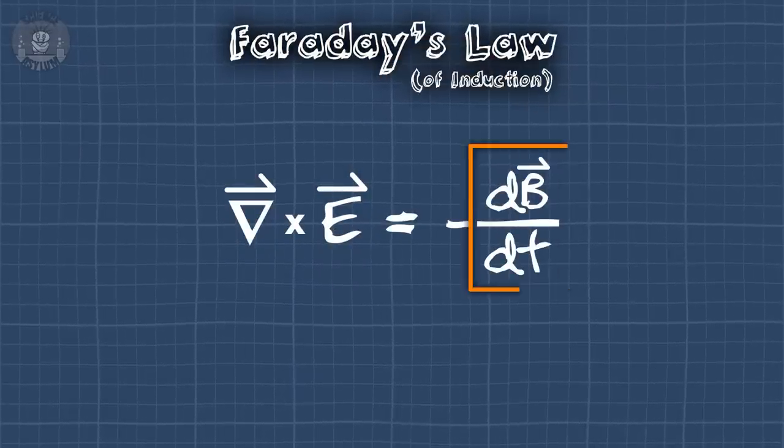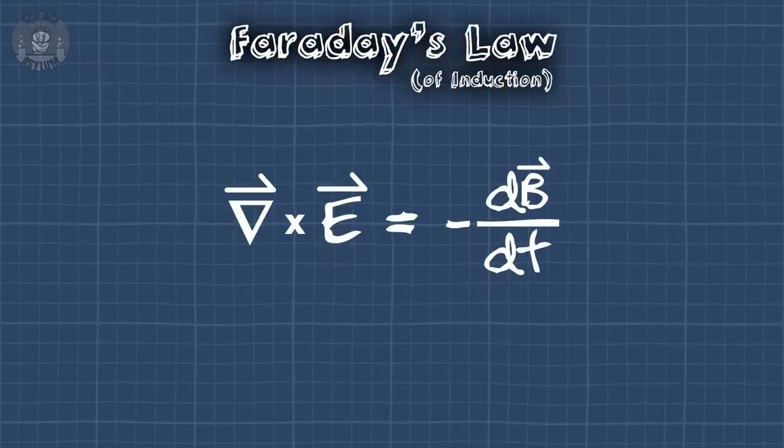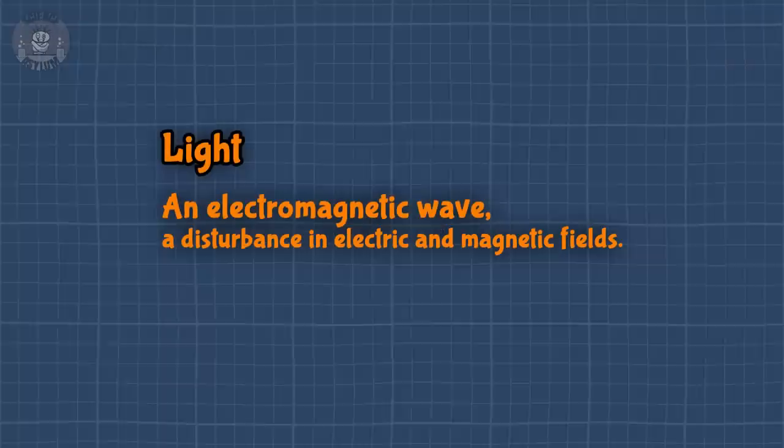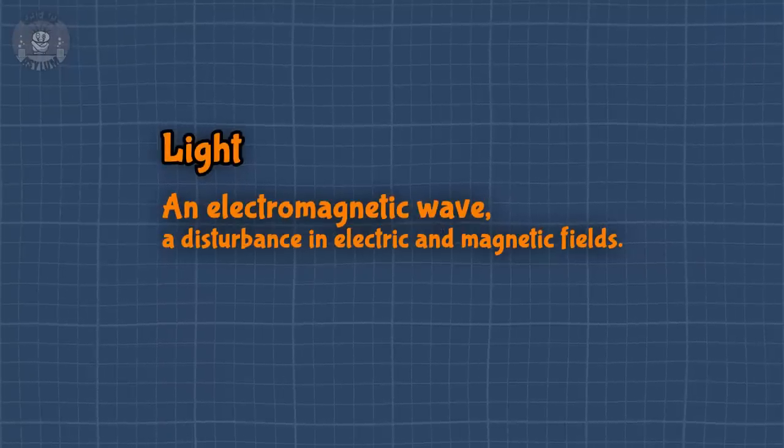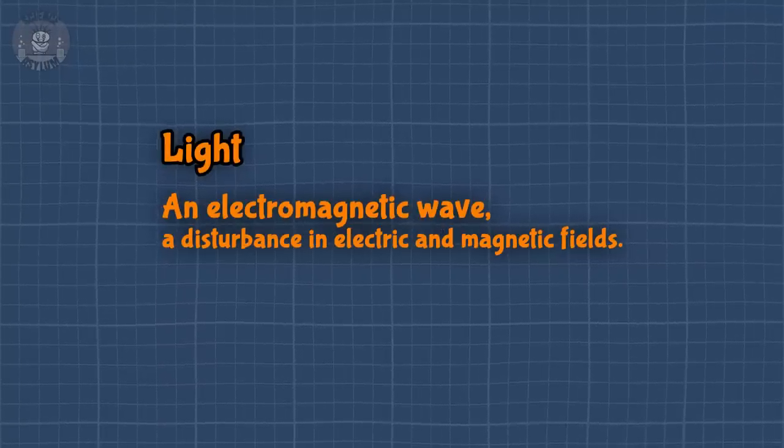Basically, a changing magnetic field makes an electric field. One of the fields can make the other field? Yeah, it's pretty weird. This is kind of a big deal. If one field can make the other field, then maybe the charges don't make the fields at all — maybe they just affect them, and maybe fields are a thing all by themselves. We said light was a disturbance in electric and magnetic fields, and light is a thing all by itself, so it makes sense.